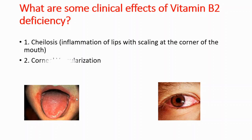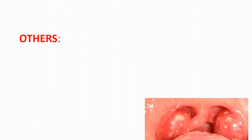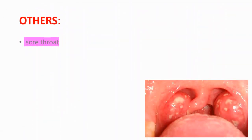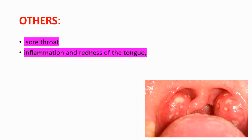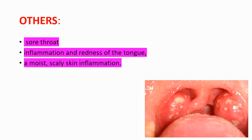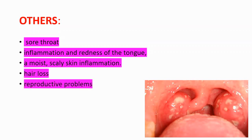The second thing is corneal vascularization, which is specific to vitamin B2 deficiency. We also have other symptoms, for example sore throat, inflammation and redness of the tongue, moist scaly skin inflammation, hair loss, and reproductive problems.